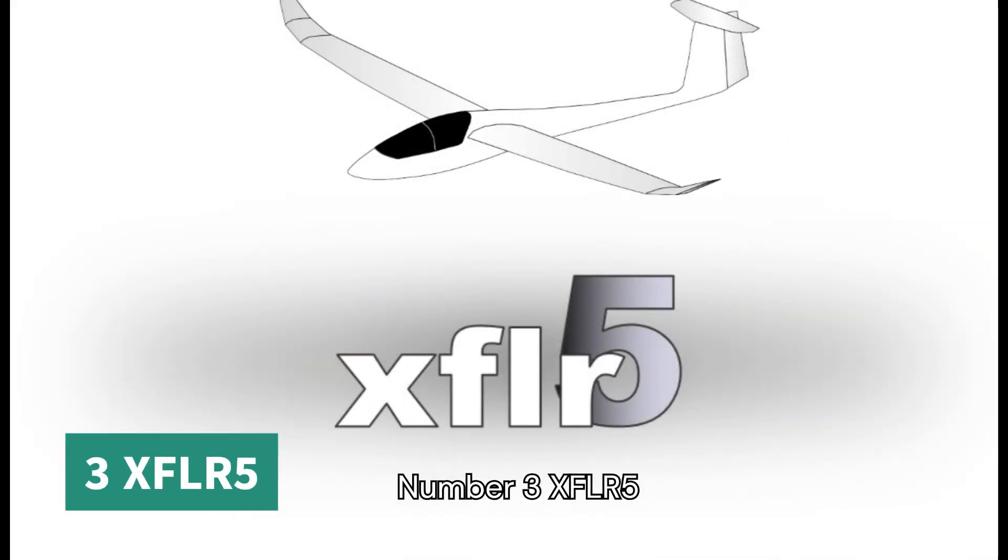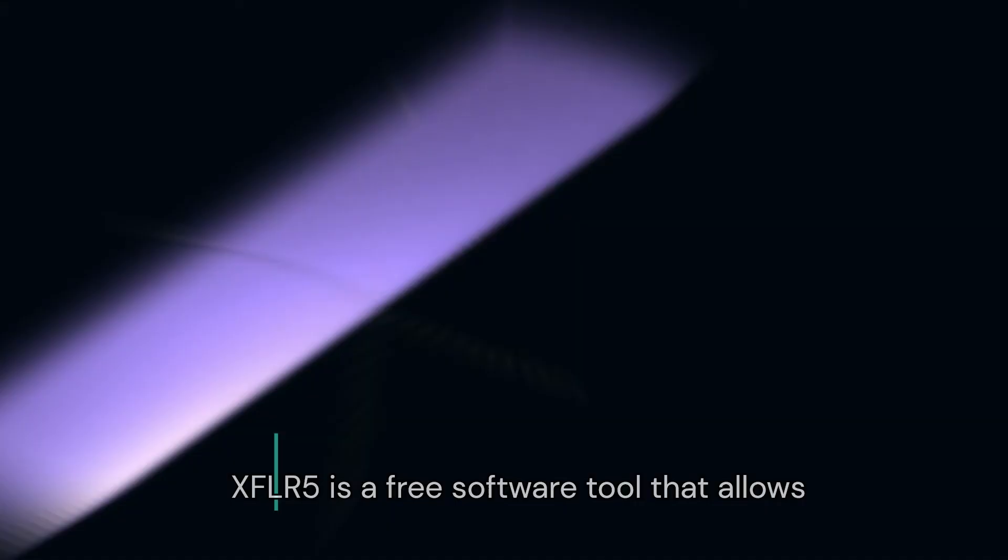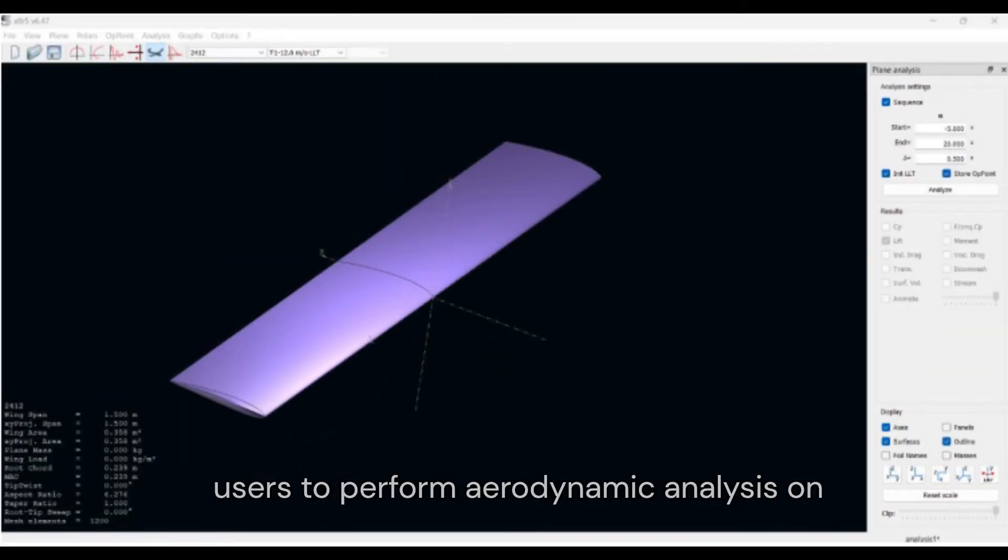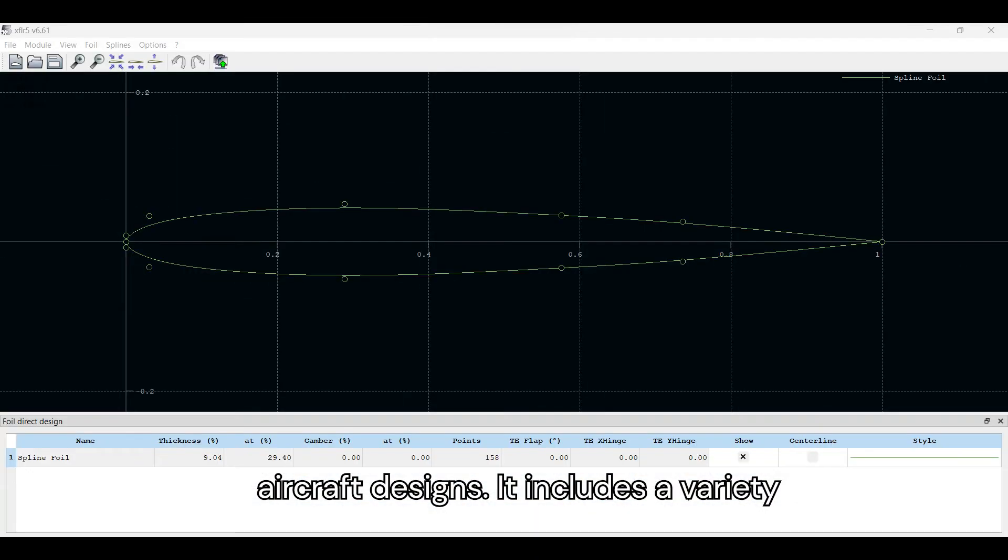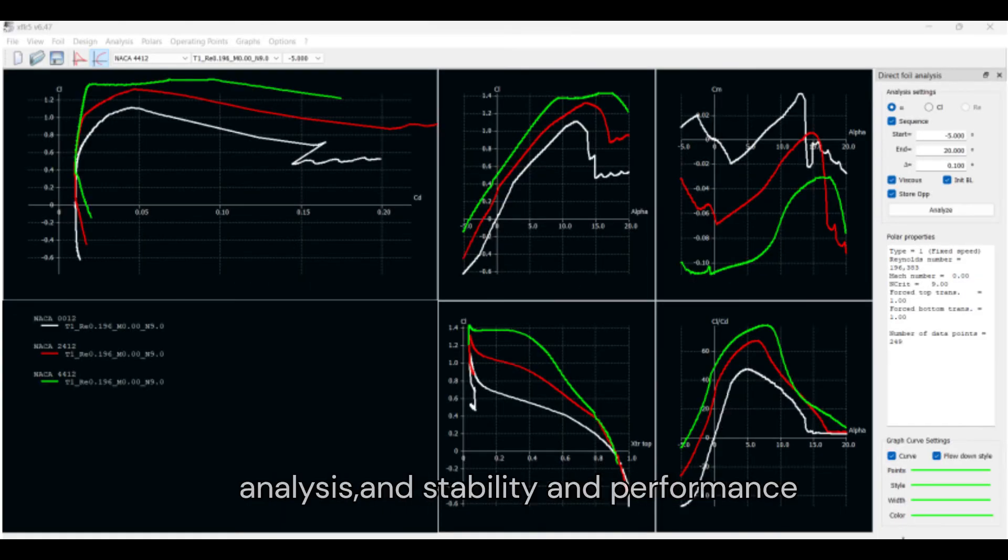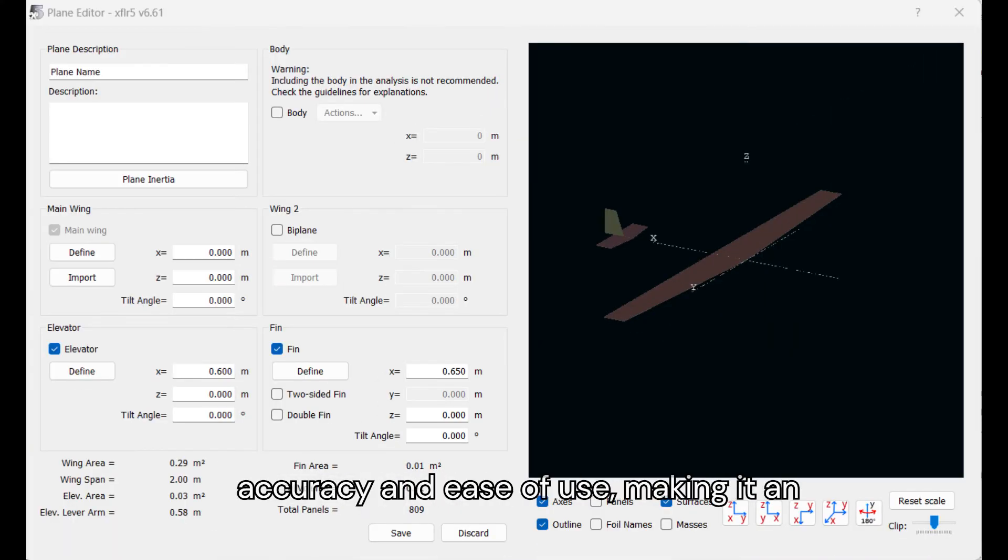Number 3: XFLR5. XFLR5 is a free software tool that allows users to perform aerodynamic analysis on aircraft designs. It includes features such as airfoil design, wing analysis, and stability and performance prediction. XFLR5 is known for its accuracy and ease of use, making it ideal for both novice and experienced engineers.